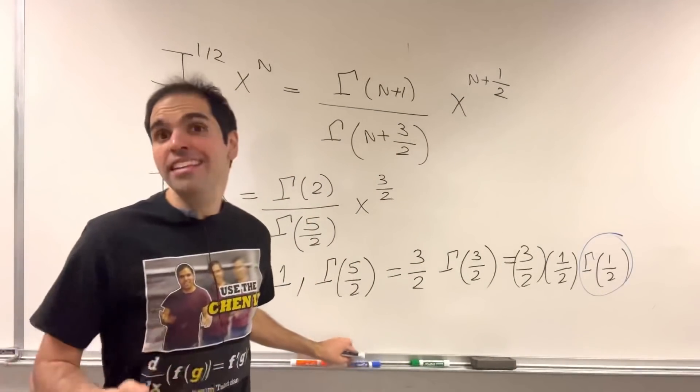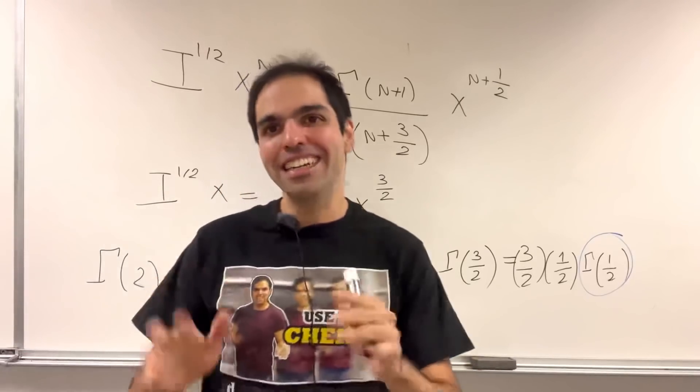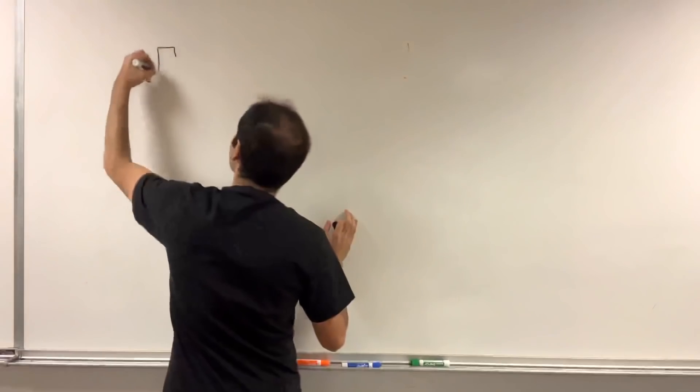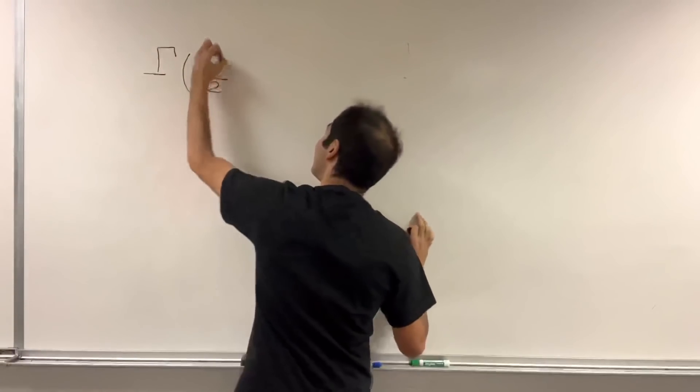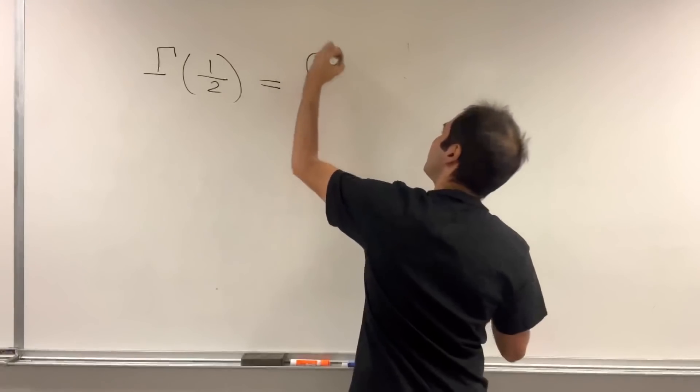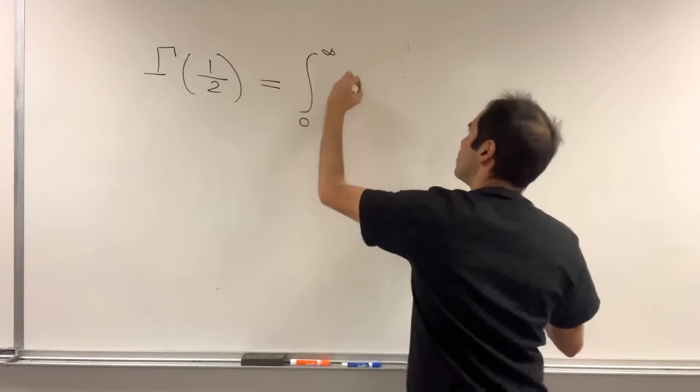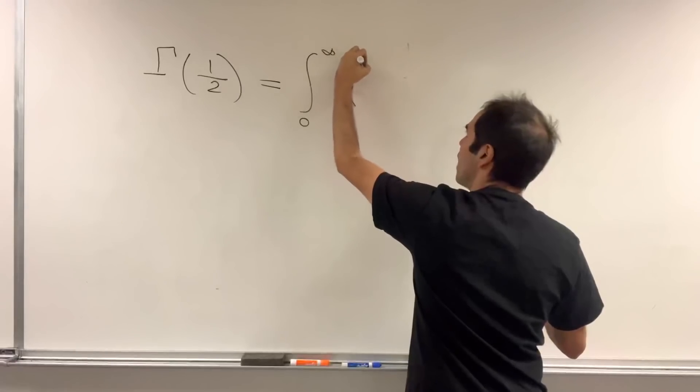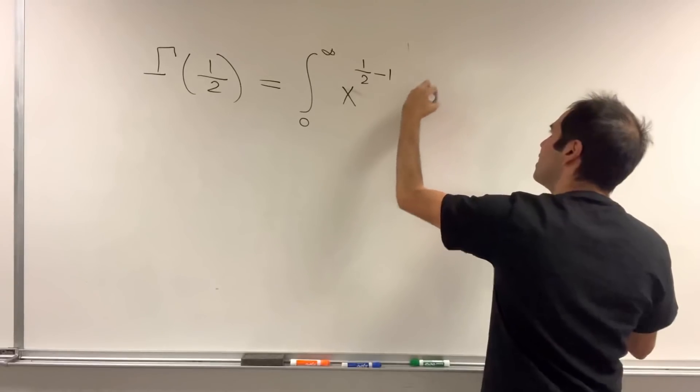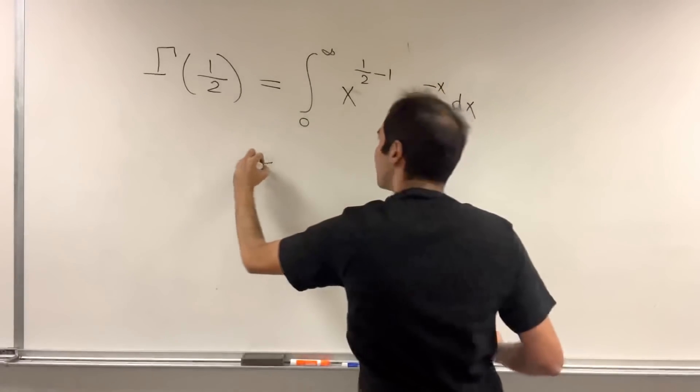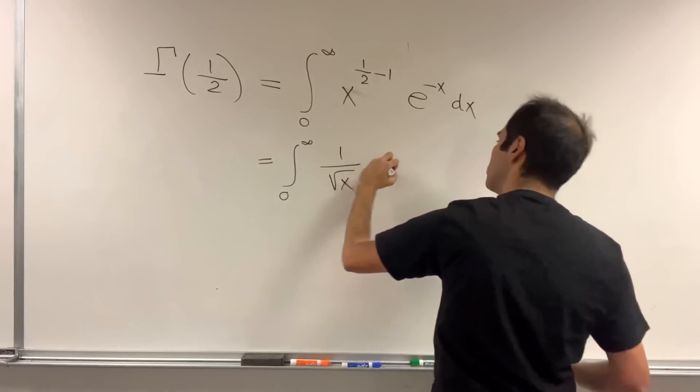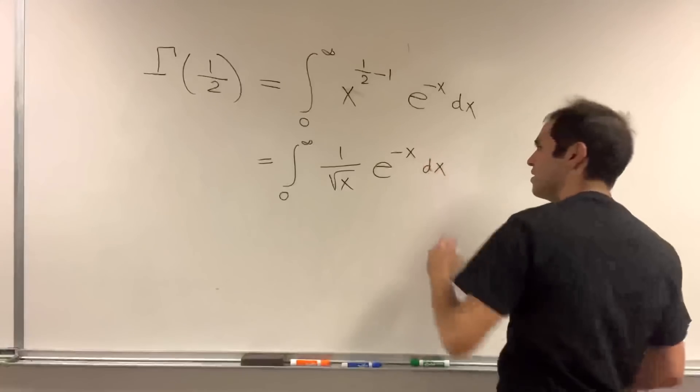And we can do that explicitly, and you may see a friend or a frenemy in this case. Because, what is gamma of 1 half? You have to see it. This is integral from 0 to infinity of x to the 1 half minus 1, so x to the z minus 1, e to the minus x dx. And that becomes integral from 0 to infinity of 1 over square root of x, e of minus x dx.